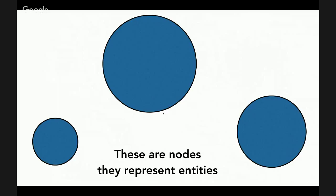There are two primary components to any network graph. The first is nodes — sometimes circles, sometimes squares depending on the visualization software. Essentially these are the entities you want to represent in your network. They could be people, organizations, locations, books, texts, or words. Once you understand the basics of network analysis, everything can begin to look like a network. It is quite a flexible way of modeling all kinds of different data.